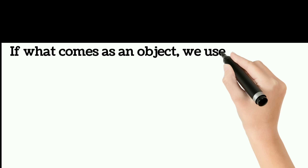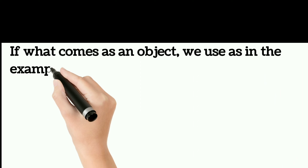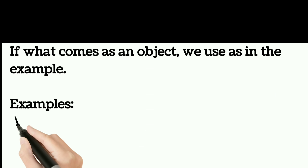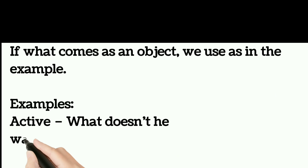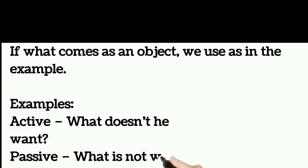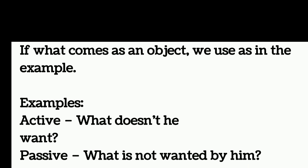If what comes as an object, we use as in the example. Active: what doesn't he want. Passive: what is not wanted by him.